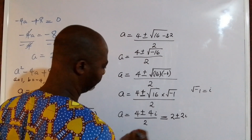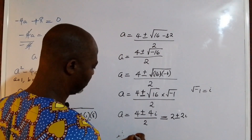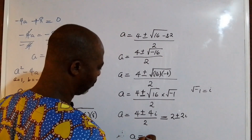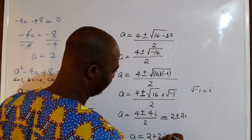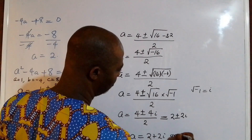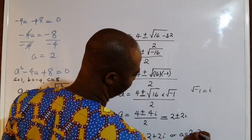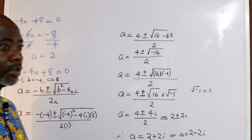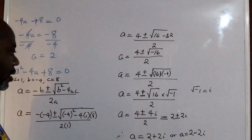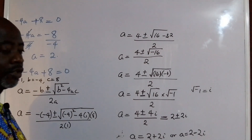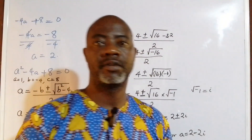Therefore, the complete set of solutions is: a equals 2 plus 2i, or a equals 2 minus 2i, or a equals 2. Those are all the values we found, and I will see you in my next class, guys.